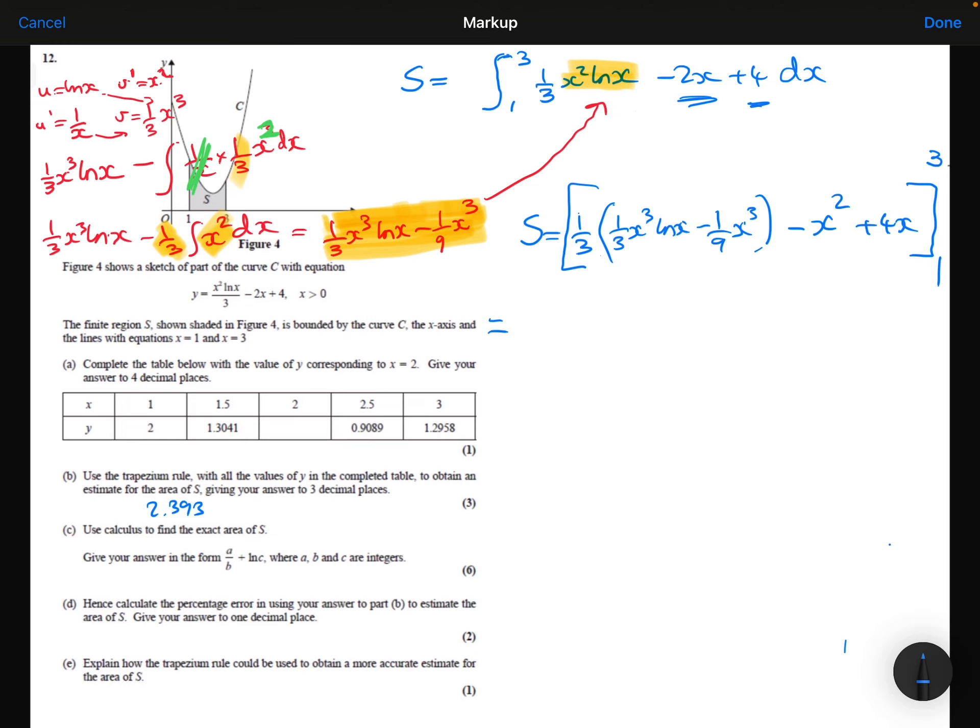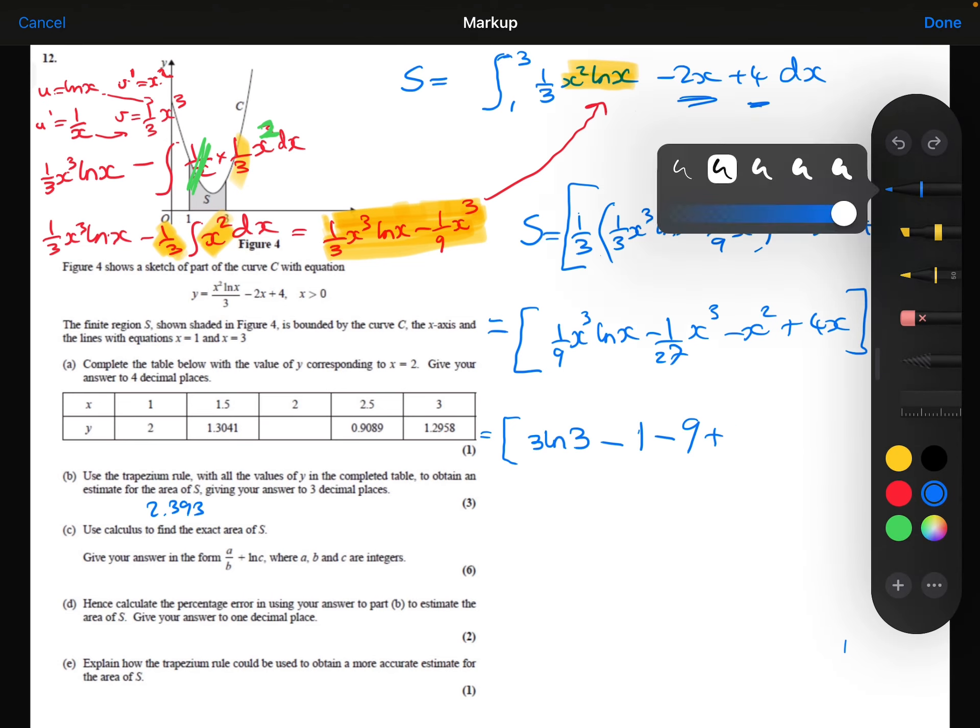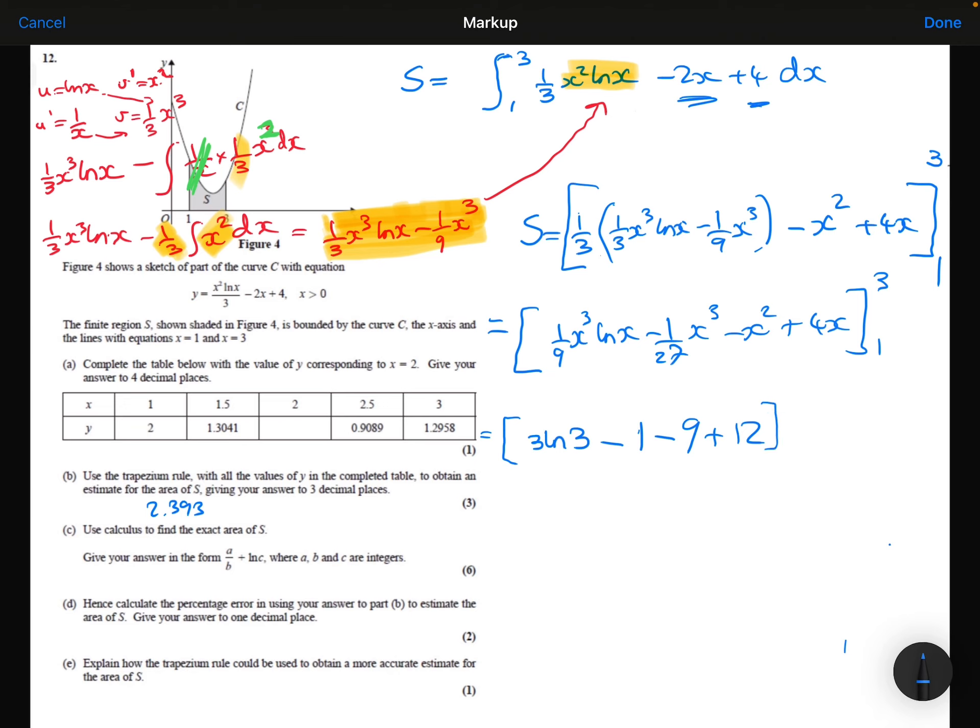Let me just expand those brackets at the front there. So we've got the 1 ninth x cubed ln x minus 1 over 27 x cubed minus x squared plus 4x. Substituting the 3 inside here then, we've got 1 ninth times 3 cubed times ln 3, so that will simplify to be 3 ln 3, minus 1 over 27 times 3 cubed, which is just 1, minus 3 squared plus 4 times 3.